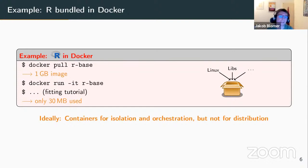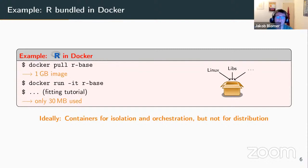Here's an example with R. If I pull the Docker container for the R statistics toolkit, I get approximately a gigabyte — a few hundred megabytes of image data. Then I use it to run something like the fitting tutorial, and it turns out that out of my close-to-gigabyte container image, I actually only used 30 megabytes. What you would ideally want is a container for the isolation part, but for the distribution it would make much more sense to have something that loads on demand — only those 30 megabytes actually needed for any given job.